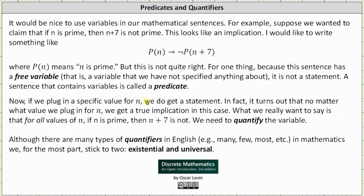Now, if we plug in a specific value of n, we do get a statement. In fact, it turns out no matter what value we plug in for n, we do get a true implication in this case. What we really want to say is for all values of n, if n is prime, then n plus 7 is not. We need to quantify the variable.